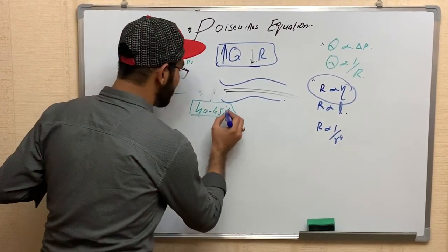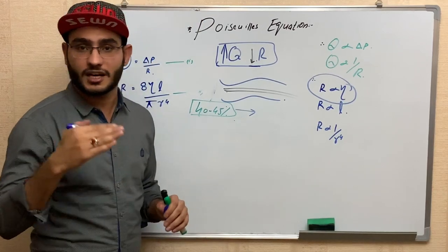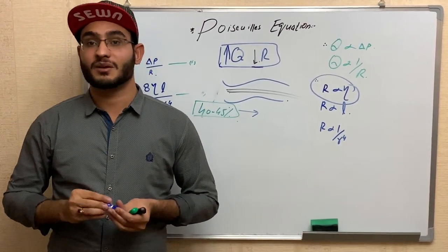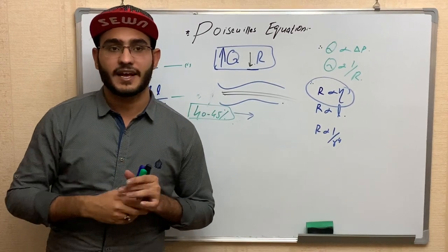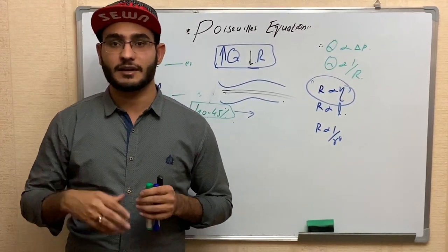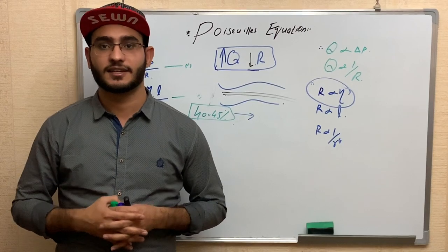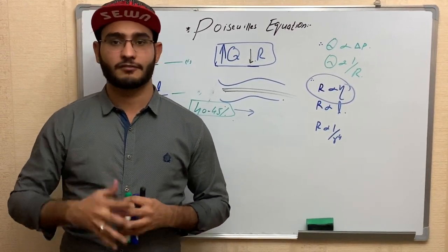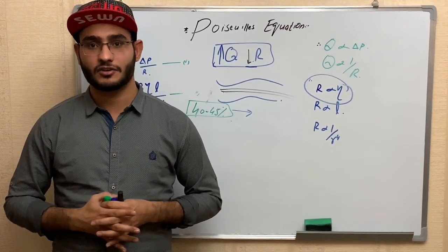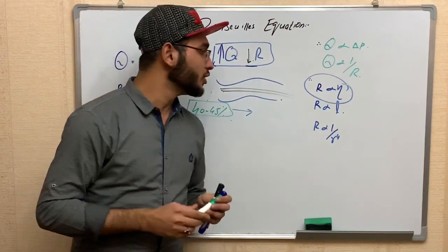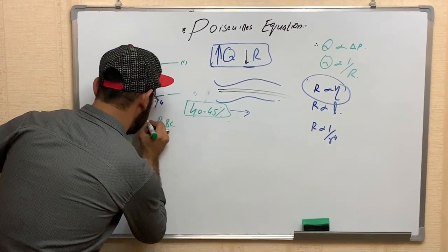When the hematocrit value exceeds 40 to 45 percent, meaning there is high red blood cell production due to a problem — for example, a tumor in the bone marrow such as multiple myeloma — the bone marrow increases production of red blood cells. This increases hematocrit, which increases viscosity, which then increases resistance.